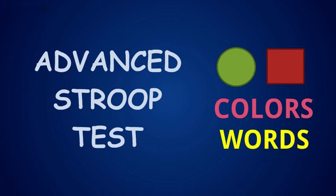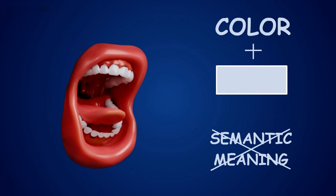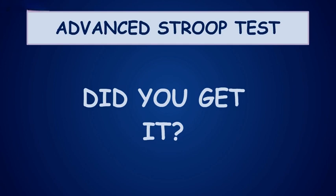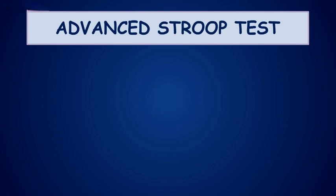In this test, you need to say the color and shapes, not the semantic meaning of the word shown on the screen. Let's just say, for example, red square, yellow triangle. Did you get it? You can just pause the video if you need more time to prepare.